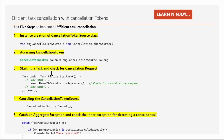Step number three: starting a task and checking for cancellation requests. A new task is created using Task.Factory.StartNew(). Within the task delegate, we use token.ThrowIfCancellationRequested(), which checks whether a cancellation request has been made. If it has, this method throws an OperationCanceledException.